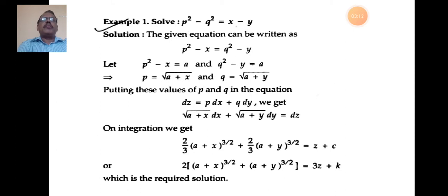Problem 1: Solve p² - q² = x - y. Separating p and x from q and y on both sides: p² - x = q² - y. Put p² - x = a and q² - y = a. So p² = x + a and q² = a + y, giving p = √(a + x) and q = √(a + y). Substituting these values of p and q into the differential equation dz = p dx + q dy.